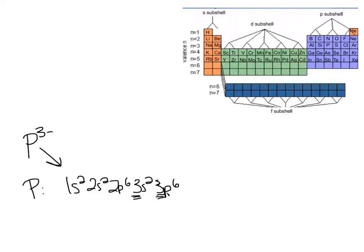What you're going to notice is that your main groups, meaning the s block and the p block, they're going to gain and lose electrons so that they do end up having the same configuration as a noble gas.